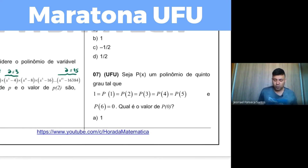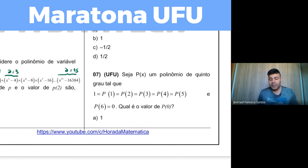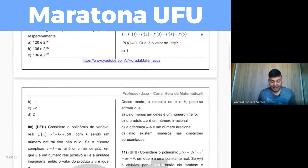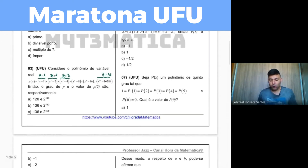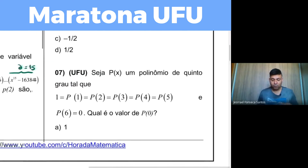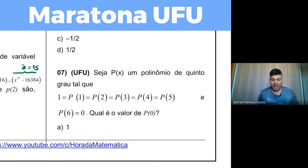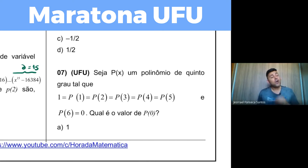Questão 7: seja P(x) um polinômio de quinto grau tal que P(1) = P(2) = P(3) = P(4) = P(5) = 1, e P(6) = 0. Qual é o valor de P(0)?